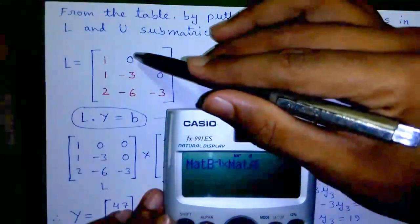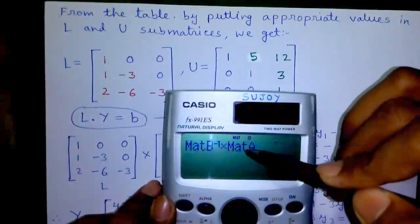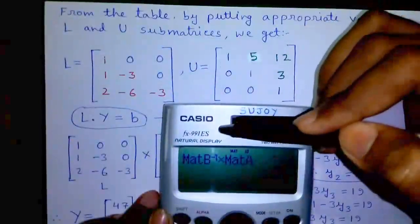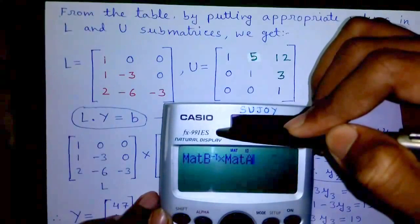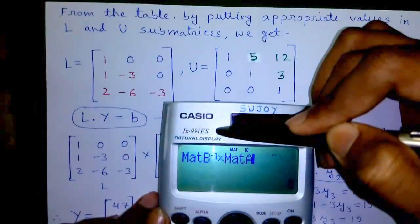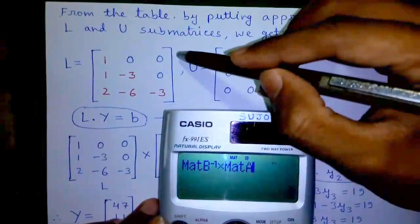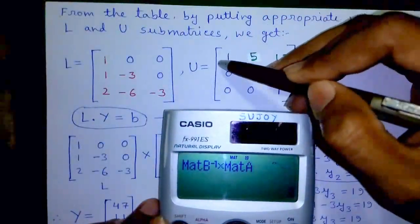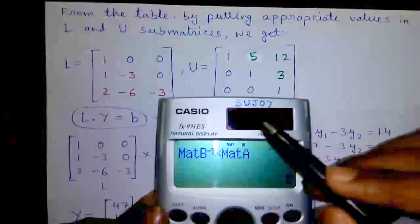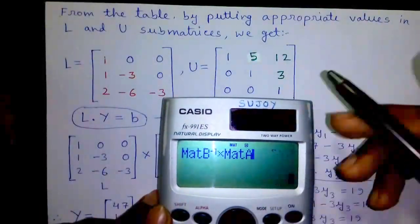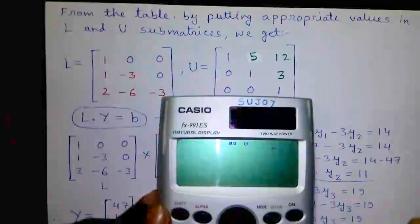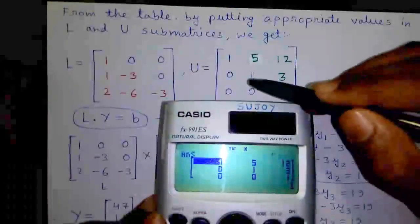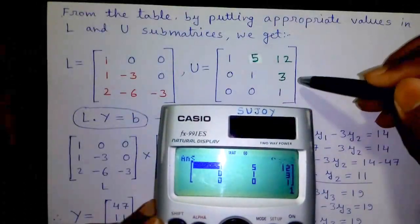I have stored matrix A as matrix A on this calculator, matrix L as matrix B, and matrix U as matrix C, since this calculator supports only matrices A, B, and C. We will do L inverse into A — that is matrix B inverse into matrix A — and we should get matrix U: 1, 5, 12, 0, 1, 3, 0, 0, 1.